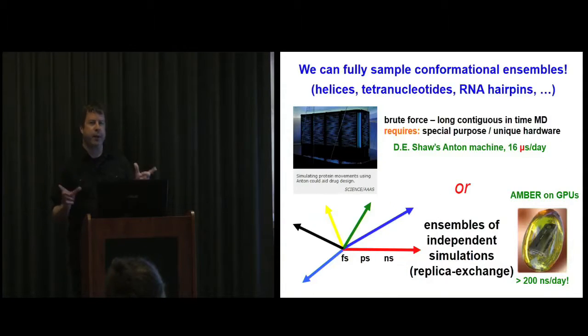There's two ways we can approach converging these conformational distributions. If I had one of David Shaw's Anton machine, I could run a very long MD simulation, but none of us have that unless you work for David Shaw. There's one available at Pittsburgh, proposals are due in a few weeks. We explored doing ensembles of independent simulations, which could exchange information or not. When we exchange information, we use replica exchange to enhance the sampling.